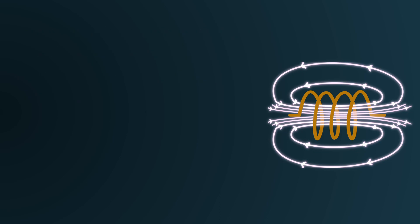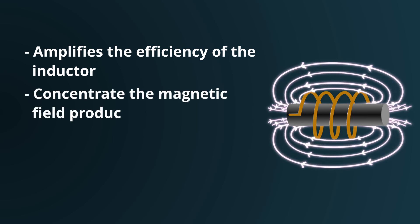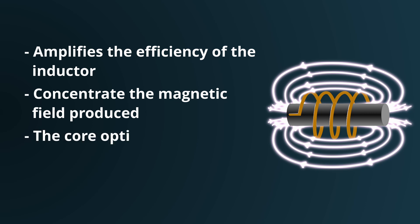Additionally, you might have come across inductors that have a core made of materials like iron or ferrite. Why add this core? The answer lies in amplifying the inductor's efficiency. These core materials are magnetic in nature. When used as a core, they serve to concentrate and channel the magnetic field produced by the coil. This intensifies the magnetic field, further boosting the inductor's capacity to resist changes in current and enhancing its energy storage potential. Essentially, these cores optimize the inductor's performance, allowing it to function more effectively in various electronic applications.